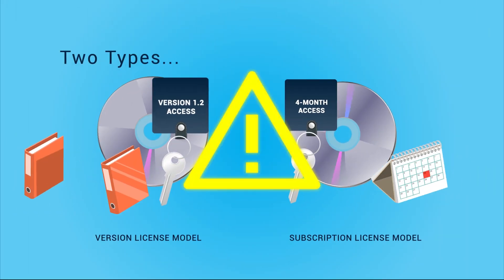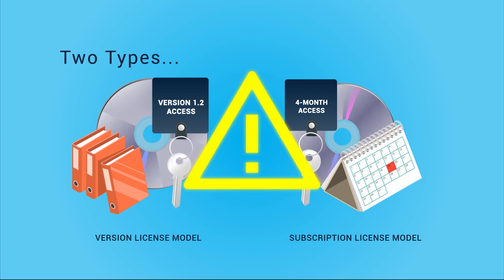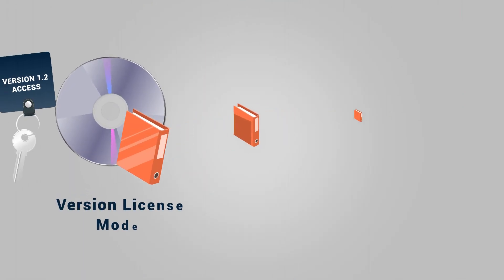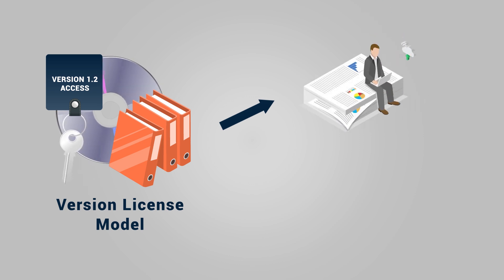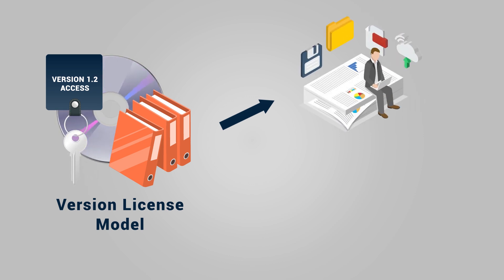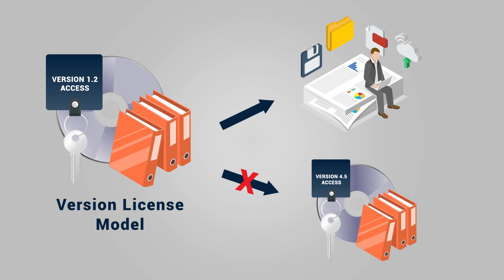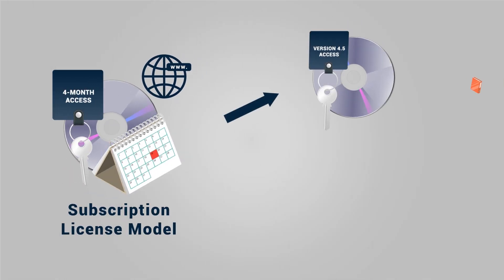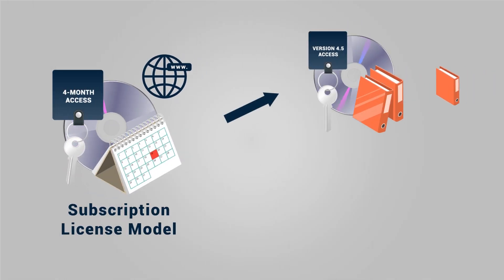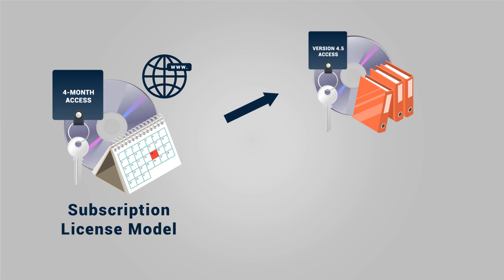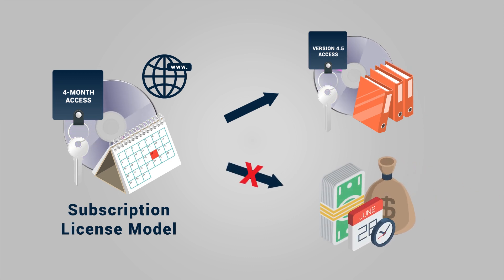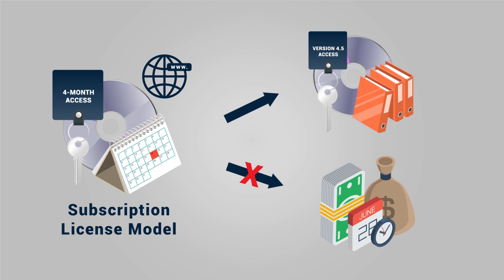These two license types are not perfect and have underlying pitfalls. Version licensing allows consumers to own their data that was created on the software, yet doesn't allow you to stay up-to-date with current versions without buying a new version. Subscription licensing allows for consumers to have access to the most updated version of software, yet charges them based on the ceaseless passing of time, even when they are not using it.